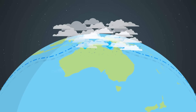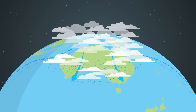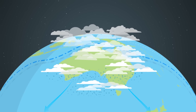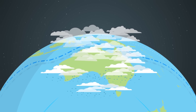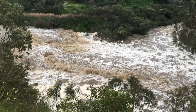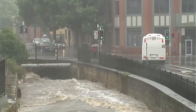Under the right conditions, weather systems across southern Australia tap into this tropical moisture, meaning high humidity, showers and thunderstorms, often leading to widespread rainfall and even flooding across southern Australia.